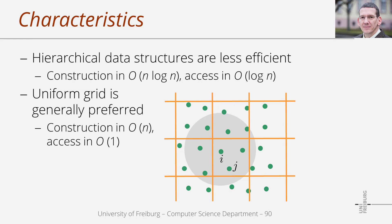We have green particles, and for particle i we would like to estimate all neighboring particles within the gray circle indicating the SPH kernel support. We consider a uniform grid and associate all particles with the respective cell. When searching neighbors for particle i, we test all particles in the same cell as particle i and all particles in adjacent cells. That's the general idea.